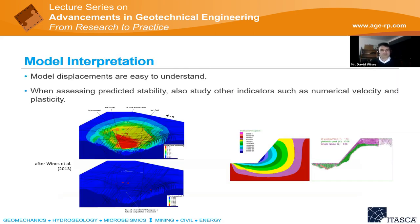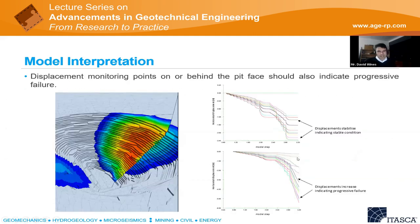Numerical analyses produce displacements, which are quite intuitive, but I'd also encourage people to look at other indicators like numerical velocity and plasticity to assess stability. We tend to use velocity thresholds to assess whether a slope is stable in our model. You can include displacement monitoring points on the slope — if the slope fails you should see displacements increasing as you run the model; if stable, displacements should flatline.